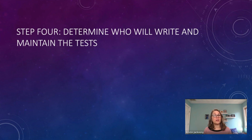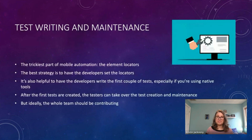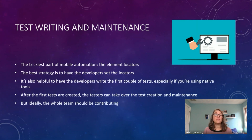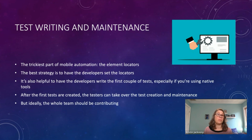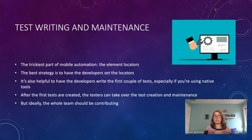Now we come to step four: determine who will write and maintain the tests. The trickiest part of mobile automation is the element locators. Elements can be hard to find in web automation, but they are even harder to find in mobile automation — they're buried in there in a strange way and everything seems to be named the same. You really need to set specific element locators like element IDs that you can interact with in order to be successful.